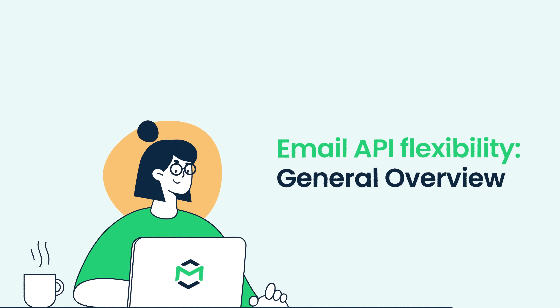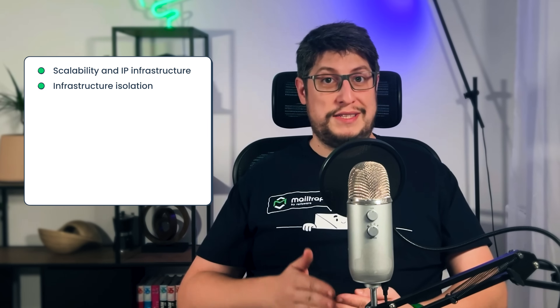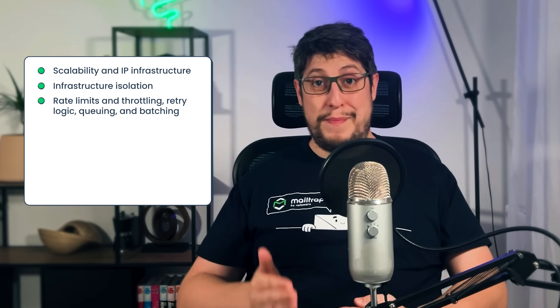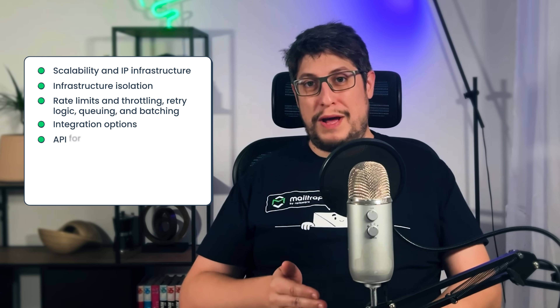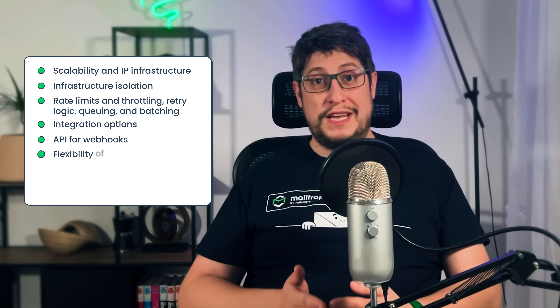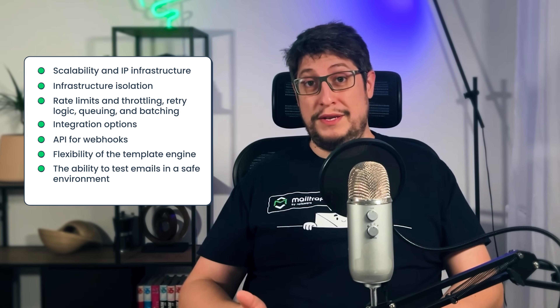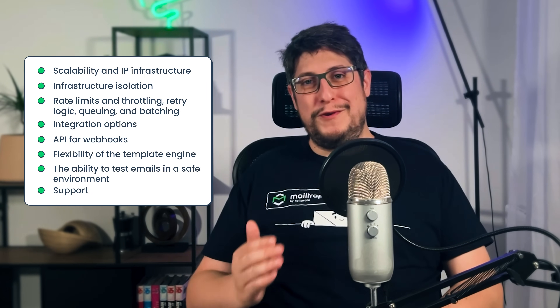Welcome to MailTrap videos, where we explore the world of emails. Today, we'll look at email API flexibility, including components like scalability and IP infrastructure, infrastructure isolation, rate limits and throttling, retry logic, queuing and batching, integration options, MailTrap's API for webhooks, the flexibility of the template engine, the ability to test emails in a safe environment, and support. Let's start from the beginning with scalability and IP infrastructure.